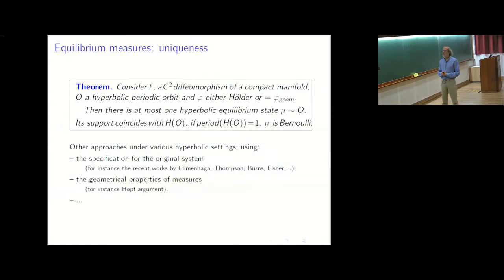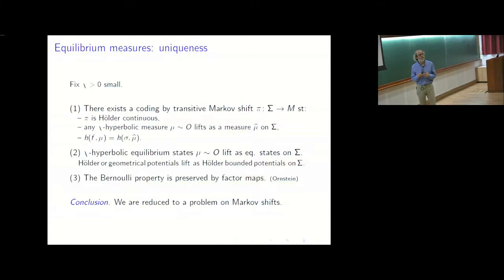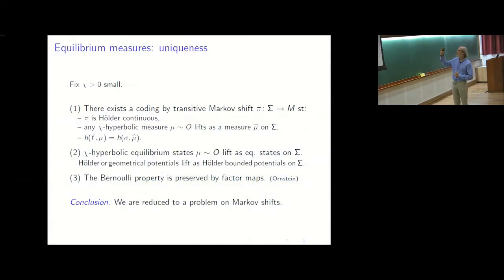Here is the proof. You want to prove uniqueness, so assume you have fixed a bound on the exponent chi and you want to prove uniqueness for equilibrium measures whose exponents are delta far from zero. Since you have fixed chi, you can consider a coding — as we said yesterday, there exists a Markov shift that is an extension of the non-uniformly hyperbolic part of the class, with a conjugacy between the shift and a set containing all the chi-hyperbolic measures homoclinically related to O.